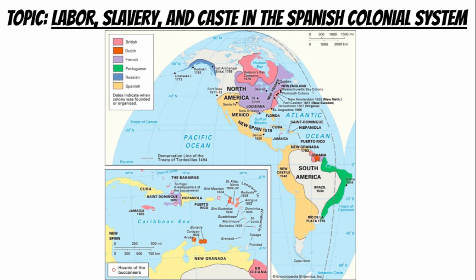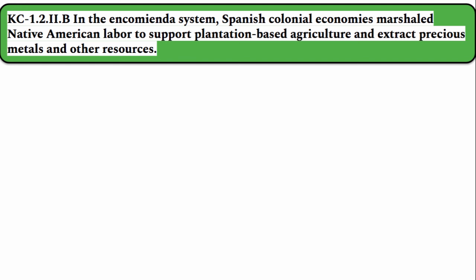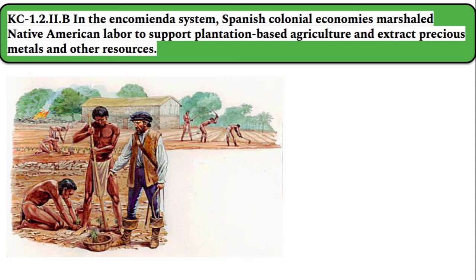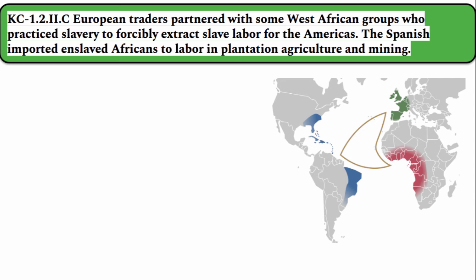With the arrival of Columbus, Spain claims territory first. But over the next century, more European colonizers would follow. While Portugal would claim areas along the coast of what would become Brazil, Spain will early on establish themselves as the main power in the Western Hemisphere. In the encomienda system, Spanish colonial economies marshaled Native American labor to support plantation-based agriculture and extract precious metals and other resources. These Spanish conquistadors were often given encomiendas — very valuable grants of land that included indigenous people who served as basically enslaved manual labor. The expectation was not only would the indigenous people serve as labor, but they would be Christianized and forced to adopt Catholicism. So this is basically a form of slavery.